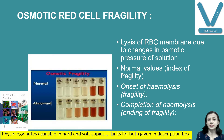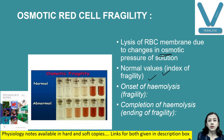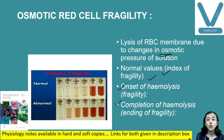First we will discuss osmotic red cell fragility — the susceptibility of the RBC membrane to get lysed when placed in solutions of different osmolarity. The normal value: onset of hemolysis starts at 0.48% NaCl and it completes at 0.35% NaCl.